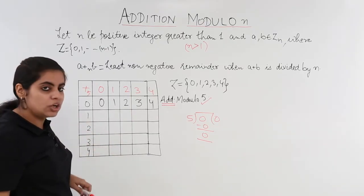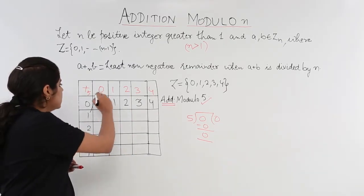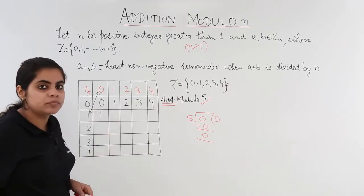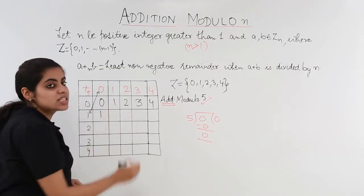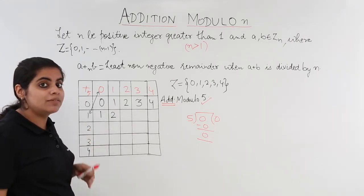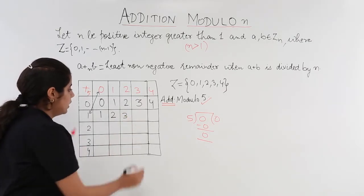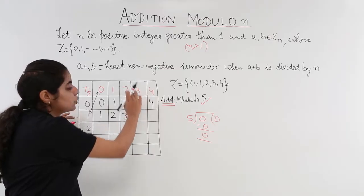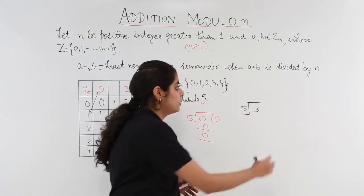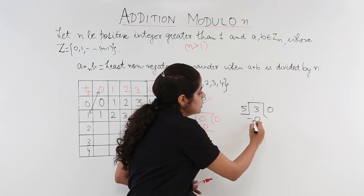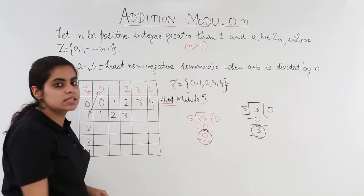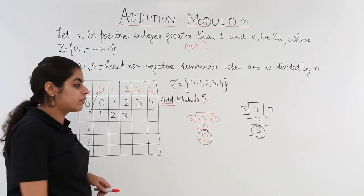1 plus 0 is 1; 1 divided by 5 gives remainder 1. 1 plus 1 is 2; 2 divided by 5 gives remainder 2. 1 plus 2 is 3; 3 divided by 5 gives remainder 3. To clear up any confusion: when you divide 3 by 5, 5 goes 0 times, and the remainder is 3 — we write the remainder in the squares. 1 plus 3 is 4; remainder is 4.